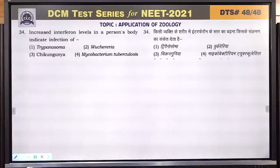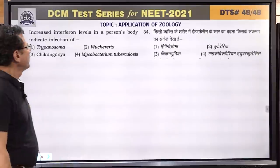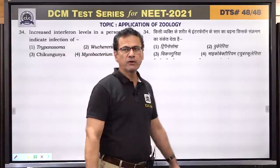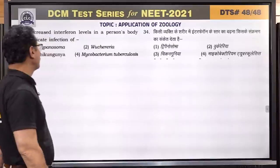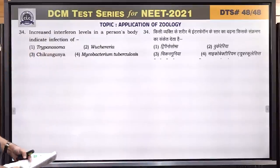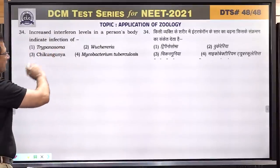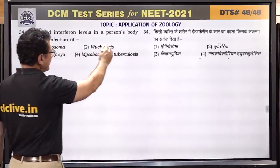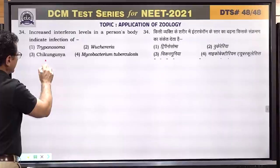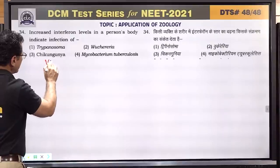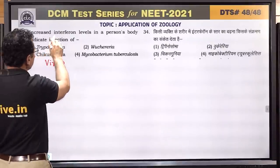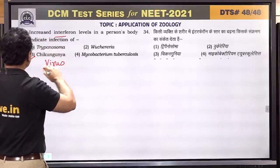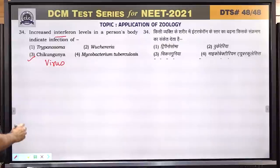Question number 34: increased interferon levels in a person's body indicate viral infection. Interferon is produced when there is a viral infection. Trypanosoma is a protozoan, Wuchereria is a helminth, Chikungunya is a virus — interferon will be produced. Mycobacterium is a bacterium. Answer is 3 — Chikungunya.